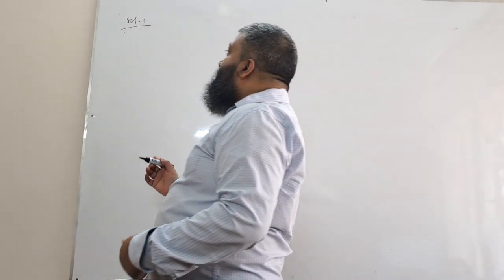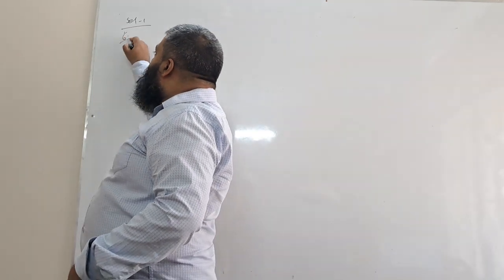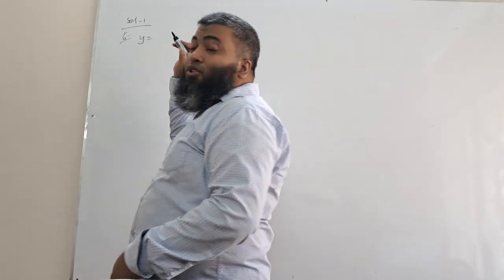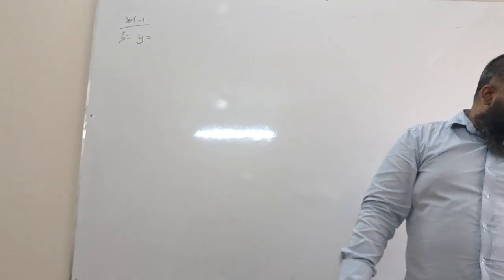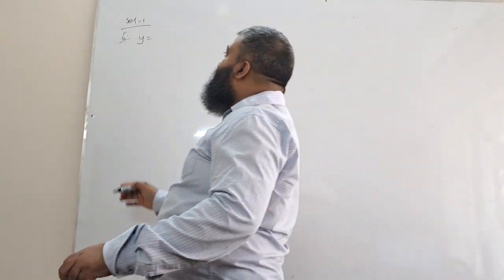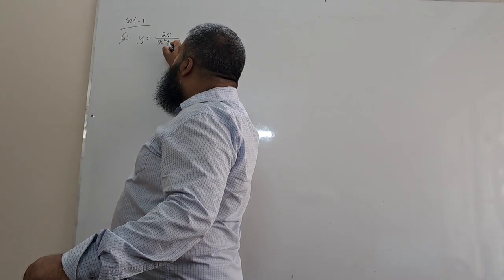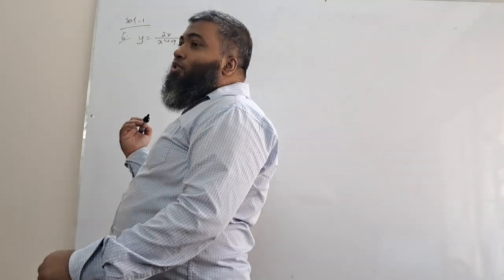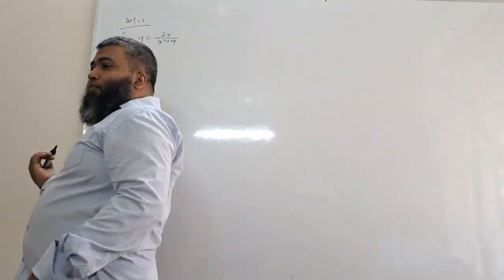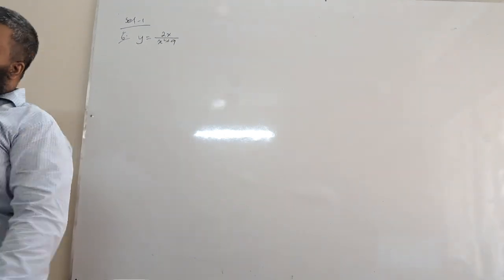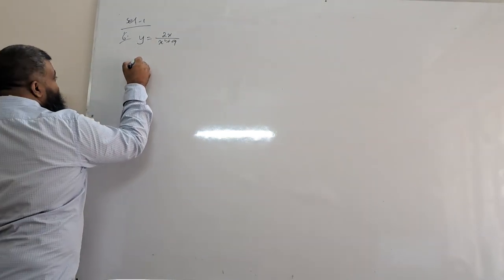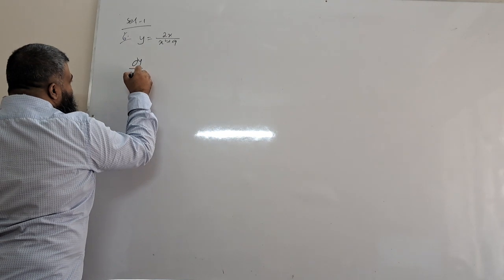Question 6: y equals 2x/(x² + 9). To find stationary points, we need dy/dx equals 0. First, find dy/dx.